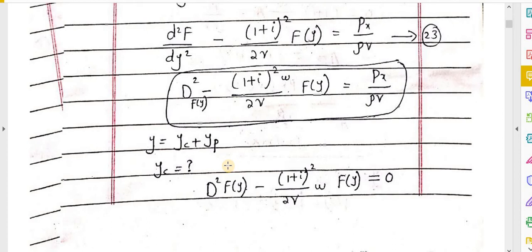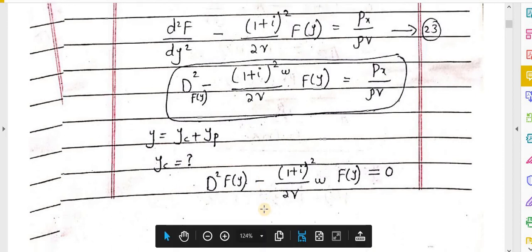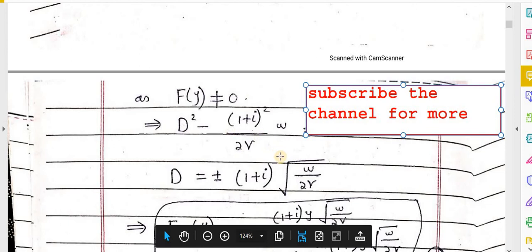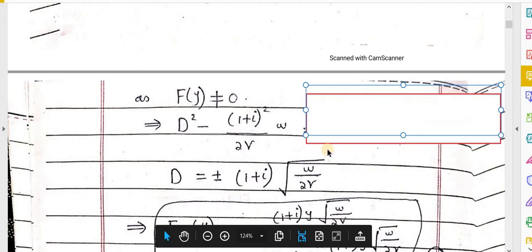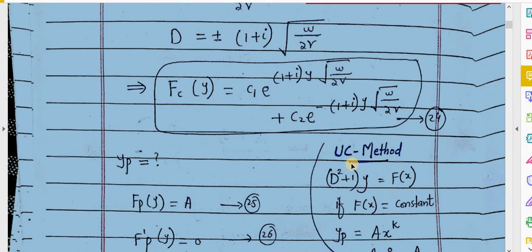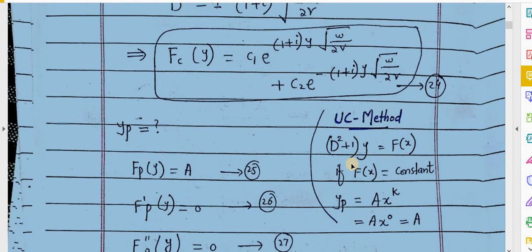The complementary function yc and the particular integral yp are added to get the final solution. Writing the equation in standard form and finding the roots, d equals two solutions. The complementary function solution is given as equation 24.